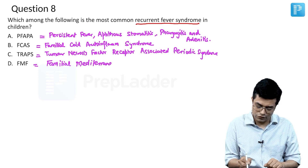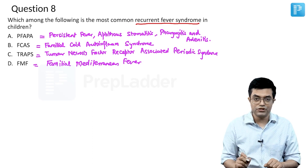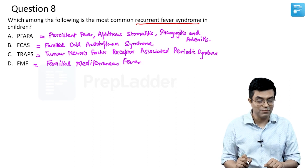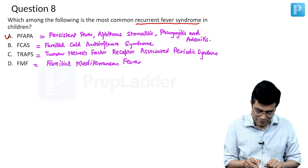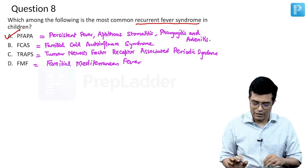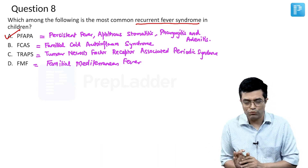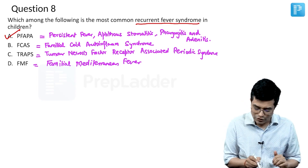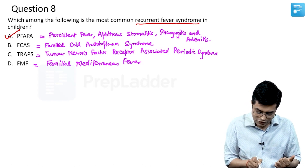All four are recurrent fever syndromes, but which is the most common in children? Surprise — it is not FMF. In children, the most common is PFAPA. Nelson clearly mentions it. About PFAPA, I will discuss some key points you can add to your notes.